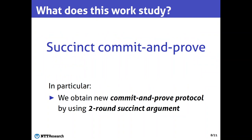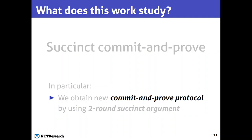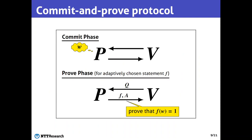In this work, we study applications to commit-and-prove protocols. What is a commit-and-prove protocol? A commit-and-prove protocol is basically a commitment scheme that has some additional proof properties. In particular, in the commit phase, the prover can commit to its secret input, just as in a standard commitment scheme. And later, in the additional proof phase, the prover can prove any statement on the committed value without opening the commitment. So in particular, for any adaptively chosen function f, the prover can prove that the committed value w satisfies f(w) = 1.